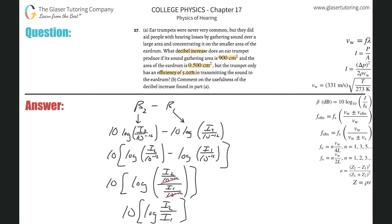To find the sound level increase, we need the ratio I₂ to I₁ — the final intensity to the initial intensity. Looking back at the problem, they gave us areas: the sound gathering area and the eardrum area. The area is decreasing as sound is concentrated onto the eardrum, so the intensity will most likely be increasing. The trumpet also has an efficiency of only 5%.